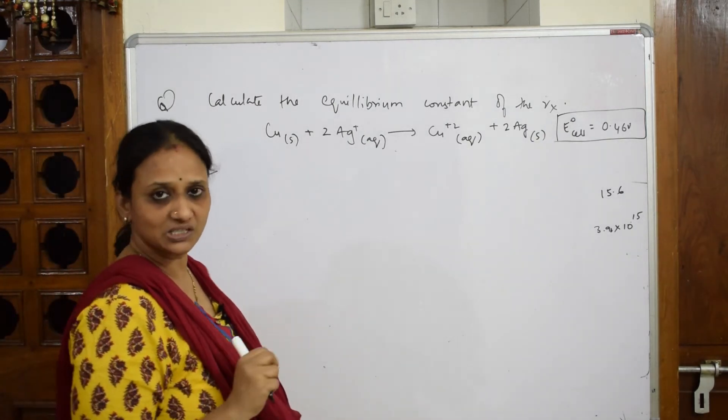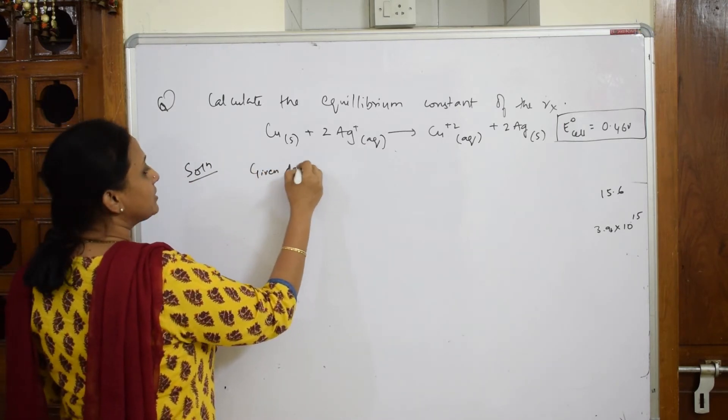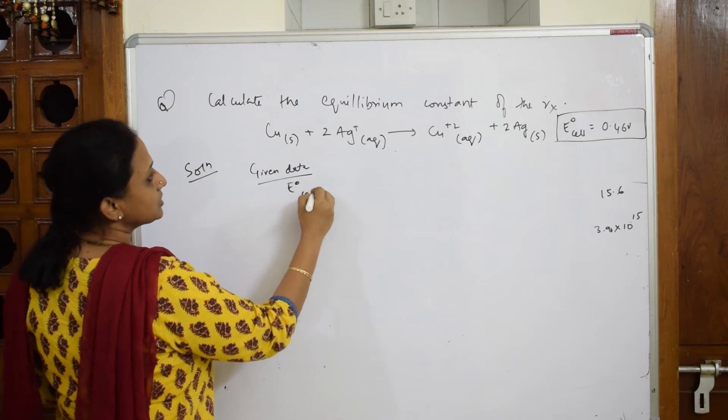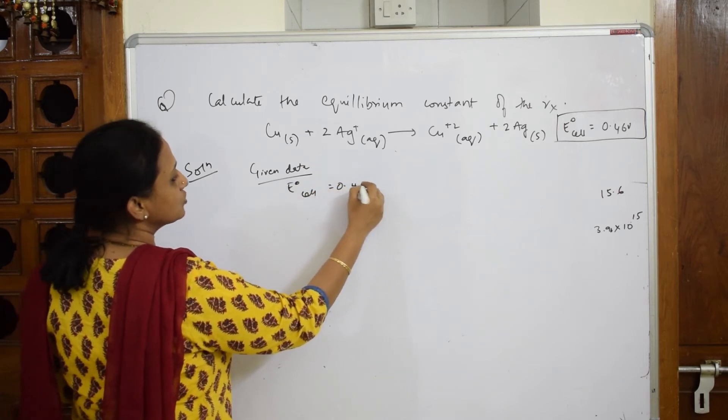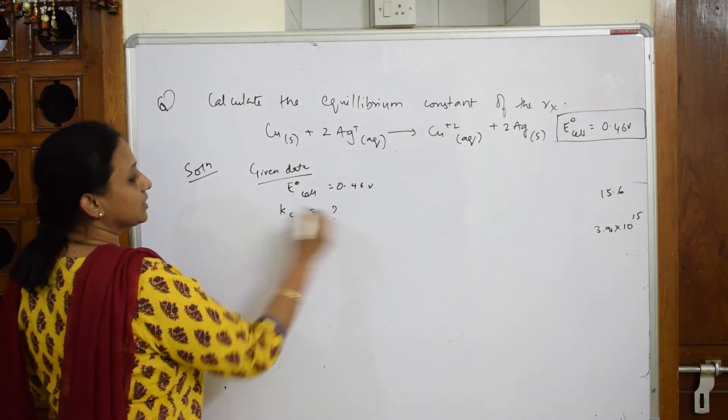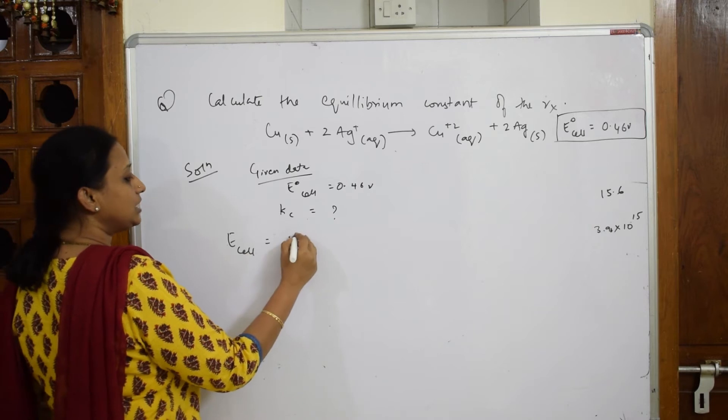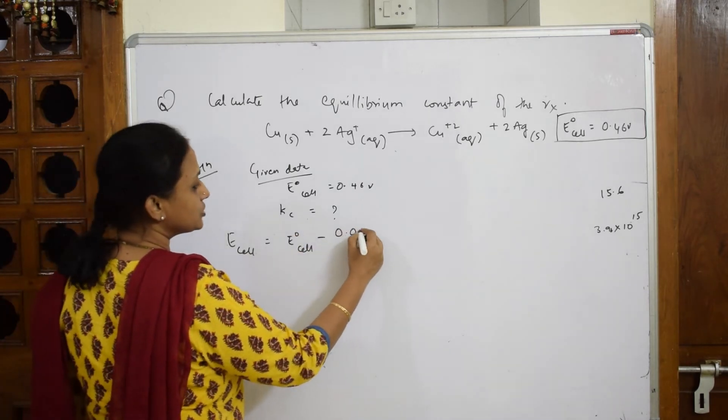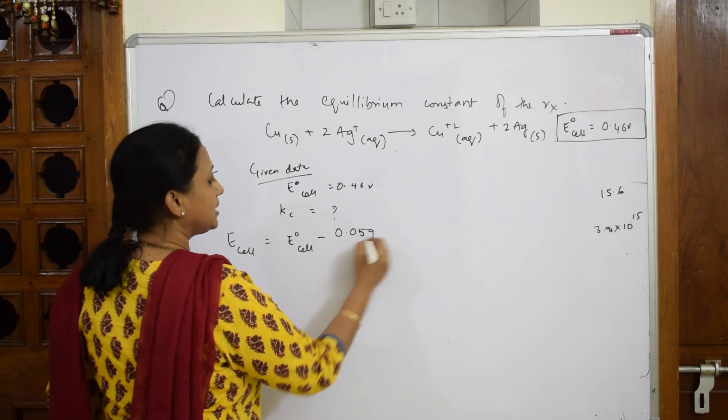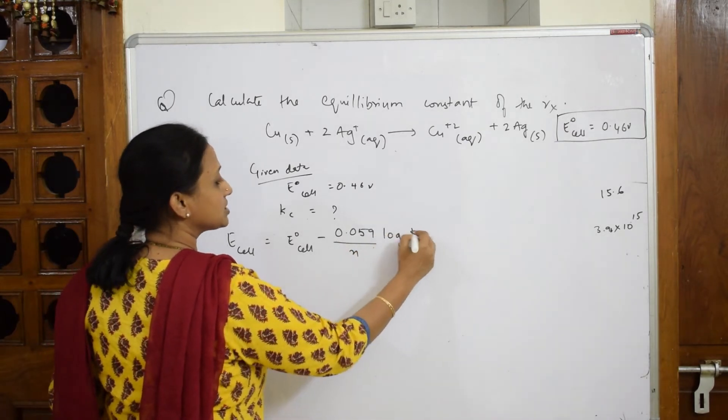What is the given data? Given data is E° cell is equal to 0.46 volts. What should you find out? You have to find out Kc. The formula is: E cell is equal to E° cell minus 0.059 divided by N log Kc. This is the formula.